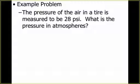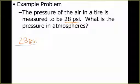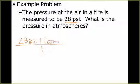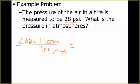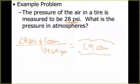So our example problem: the pressure of the air in a tire is measured to be 28 psi. What is that pressure in atmospheres? Just like we've always done whenever we do a conversion, we're going to start with the number they give us — 28 psi. From our list of conversions, we know that 1 atm is equal to 14.69 psi. You multiply going across and divide top to bottom, and we end up with 1.9 atm. So the pressure in that tire is about twice what our regular atmospheric pressure is.